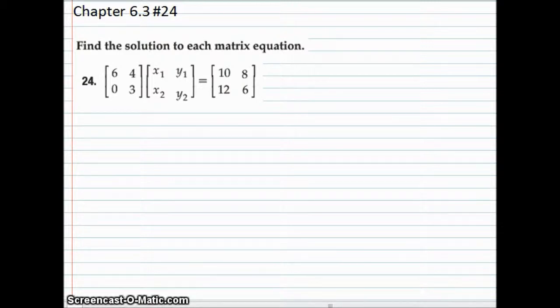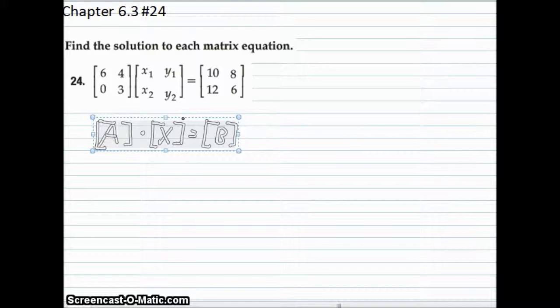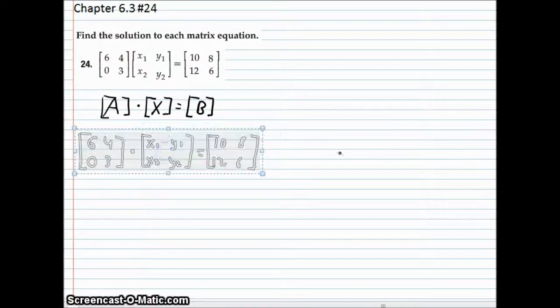So, the matrix form of an equation is as follows: Matrix A times matrix X equals matrix B. So, in other words, it's what we already had.